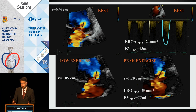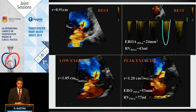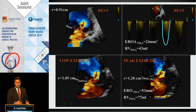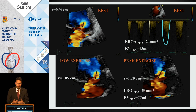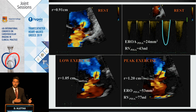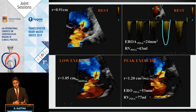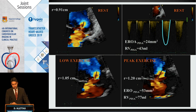We perform PISA at rest and PISA at peak exercise. We are on the safe side when dealing with organic MR, because the PISA hemisphere is more like a real hemisphere, so the PISA measurements are more accurate, in contrast with secondary MR where the semi-elliptical shape of PISA does not always give accurate measurements.